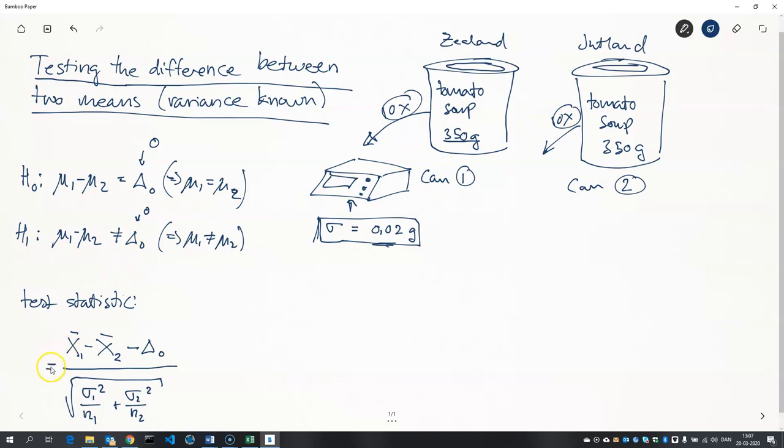I'll call this test statistic Z naught because it does have a standard normal distribution. So now I have it and I am able to compute this number and I am able to say something about whether or not it's an unexpected number and how unexpected it is. And we'll do that in Excel.